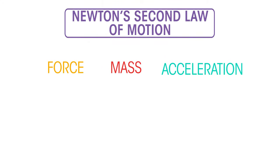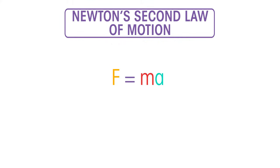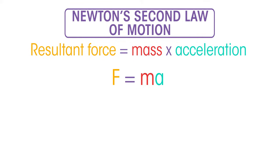The relationship between force, mass and acceleration is known as Newton's second law of motion. It can be summarised in this equation: resultant force equals mass times acceleration.